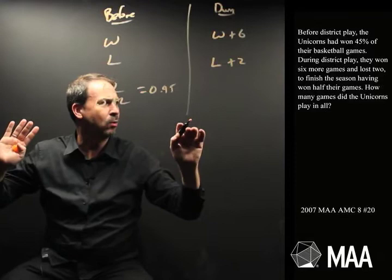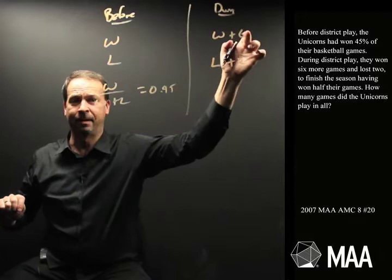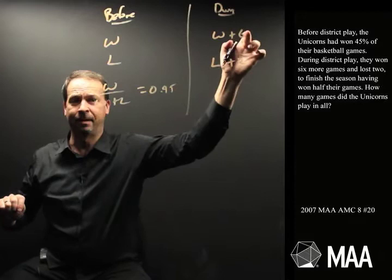So at the end of the season, we're over here. This is half of all the games. Now there's the number of wins, there's the number of losses. If the number of wins is half the number of games, it must equal the number of losses. W plus six equals L plus two.